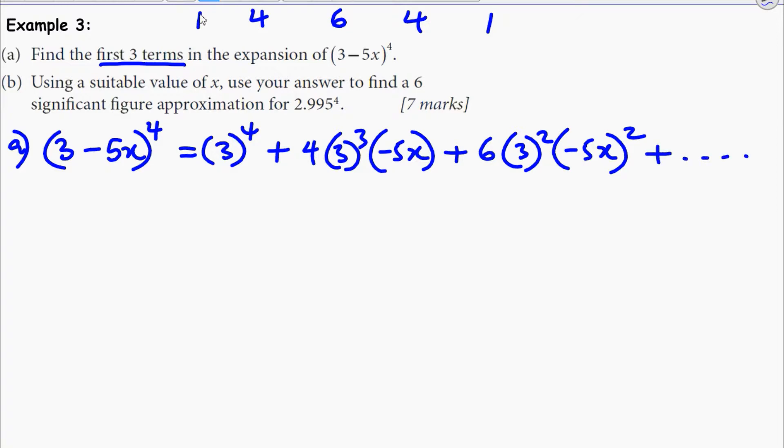Remember, we just need three terms, and we can simplify this. So this will be 81 - 540x + 1350x^2 plus whatever comes next. So that's it with part A.